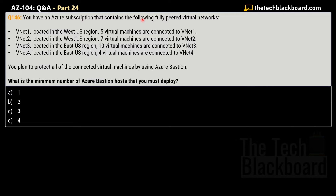The question says you have an Azure subscription that contains the following fully paired virtual networks — please remember this key point: fully paired. We are given four virtual networks. VNet one is in West US with five virtual machines. VNet two is in West US with seven virtual machines. VNet three is in East US with ten virtual machines. VNet four is in East US with four virtual machines. You plan to protect all the connected virtual machines using Azure Bastion.